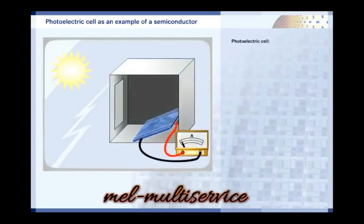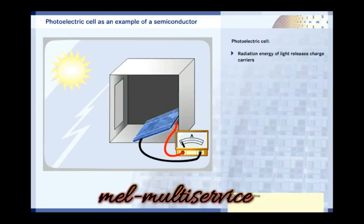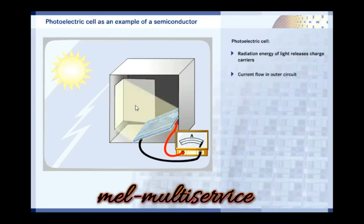Photoelectric cells are another example of a semiconductor. The energy of sunlight falling on the cell releases electrons, turning the semiconductor into a conductor. Try it out by opening the window to let in the sun.